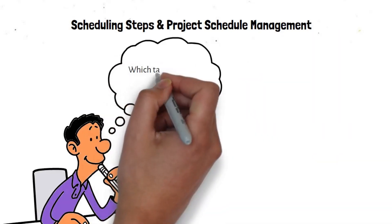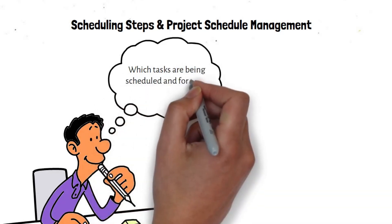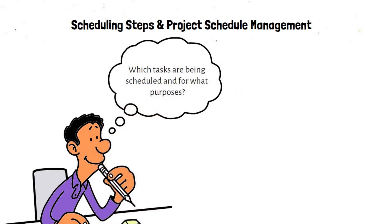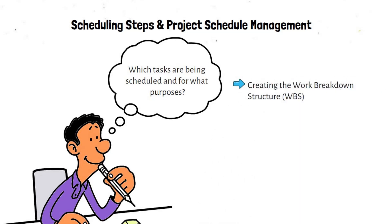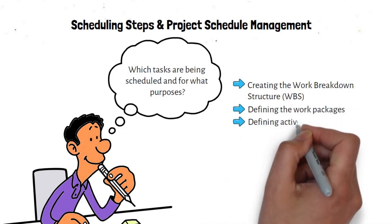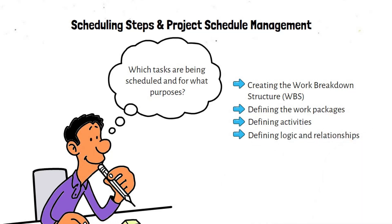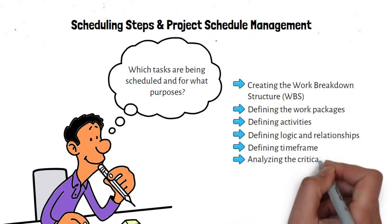While creating a project schedule, the scheduler must ask: which tasks are being scheduled and for what purposes? The answer to this question requires expert knowledge and experience. Many experts have their opinions on what is required to create a serviceable schedule. Basically, project scheduling follows these steps: creating the work breakdown structure (WBS), defining the work packages, defining activities, defining logic and relationships, defining the time frame, and analyzing the critical path.